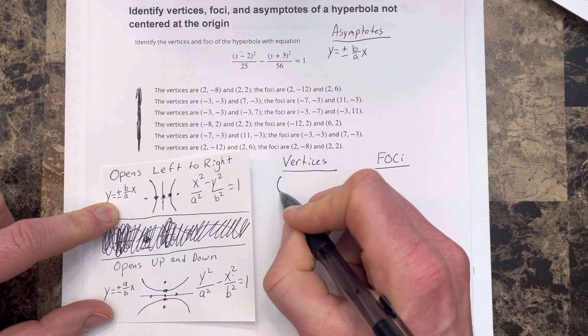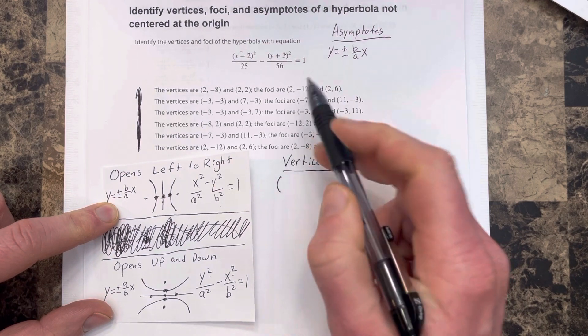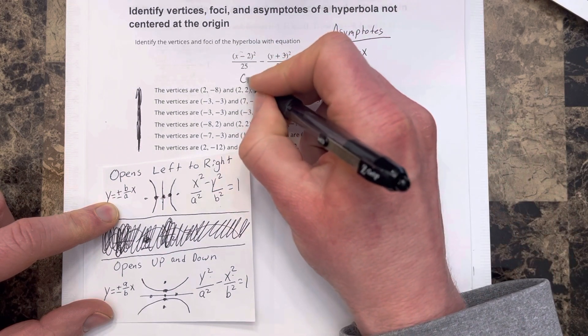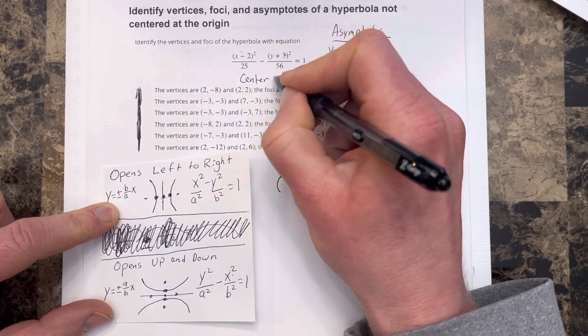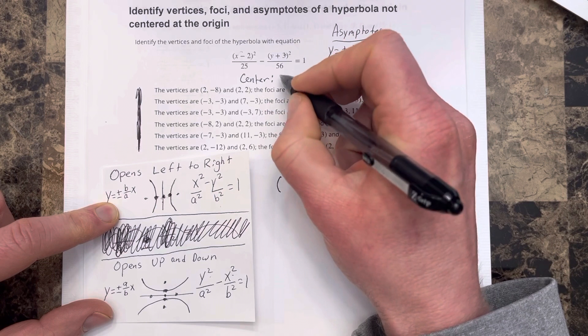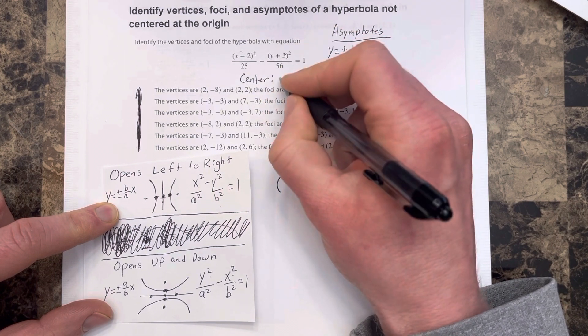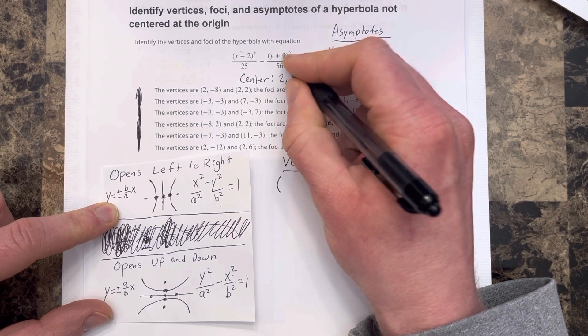Now that we're dealing with a center that is not at 0, 0, the center is always h, k, and we have h here which is 2, and k here which is negative 3.